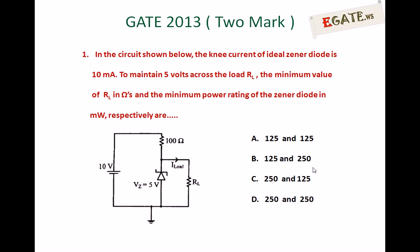The options are: A. 125 and 125. B. 125 and 250. C. 250 and 125. D. 250 and 250.